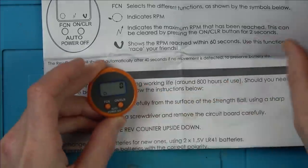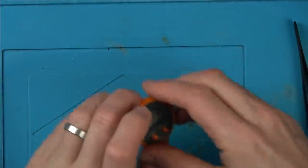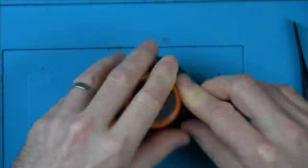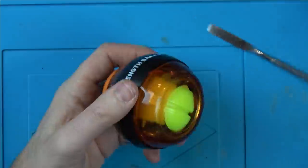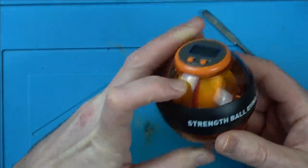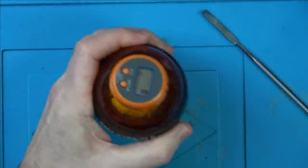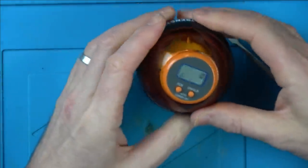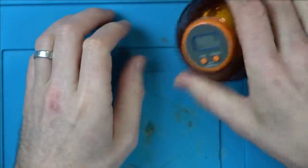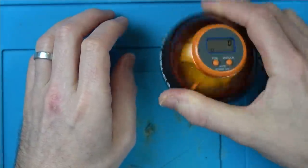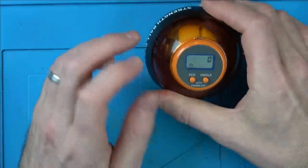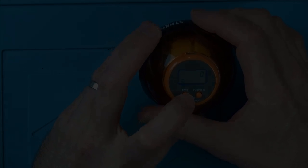Shows the RPM reached within 60 seconds. Use this function to race your friends. Right, I don't think any of those functions are going to work, but let's see. Right, let's see if it registers anything. No, it's not going to. So I have to look into getting a reed switch, because otherwise it's pointless having this display. It doesn't do anything.